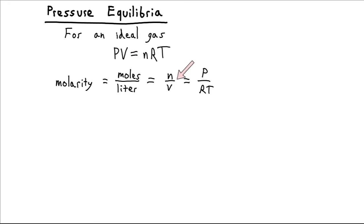Now if we solve this for n over v, and n is in moles and v is in liters, well moles over liters, that's molarity, that's concentration. And n over v is equal to P over RT, according to this ideal gas expression.